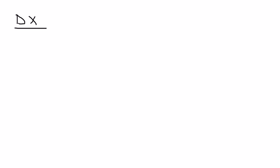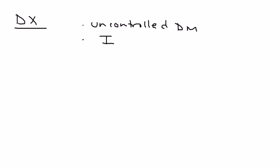Diagnosis relies on clinical suspicion combined with symptomatology. If you have an uncontrolled diabetic or someone who is immunocompromised developing these symptoms, you need to isolate the organism. This is done by taking a tissue sample — essentially performing a biopsy of the affected tissue.